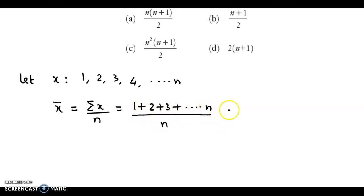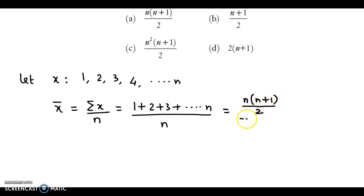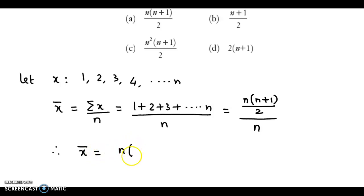The sum of first n natural numbers is given by n into (n plus 1) by 2, divided by n. Simplifying this, we obtain the mean x bar as n into (n plus 1) upon n into 2.